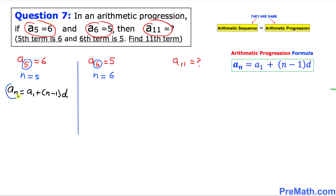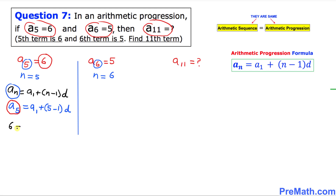This a(n) is simply a(5). We don't know a(1), so just leave it. A(1) plus — in our case n is 5, so replace n by 5 — minus 1. We don't know a(1) and we don't know d either, just leave it. We know a(5) equals 6, so: 6 equal to a(1) plus 4d. I am going to call this equation number 1.